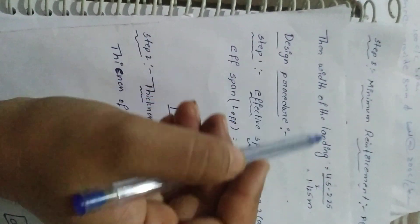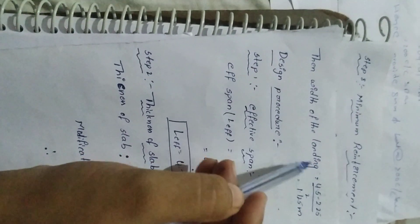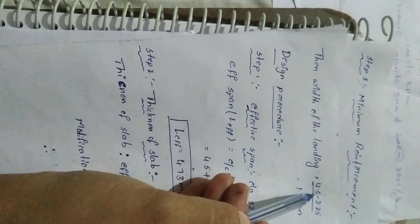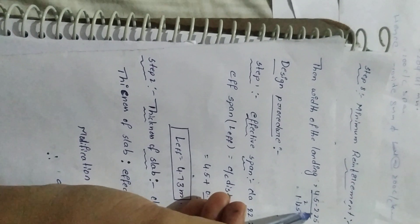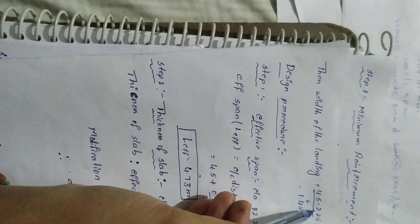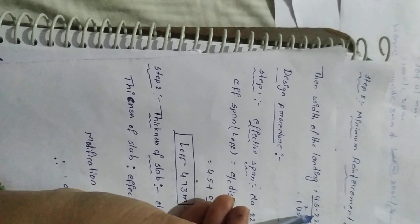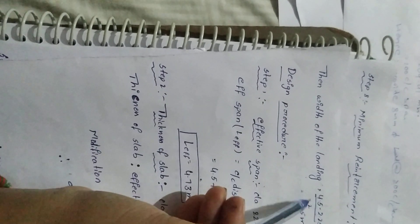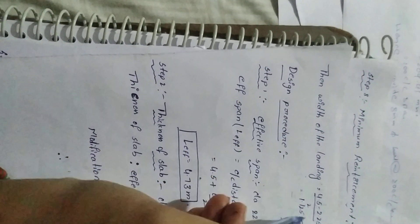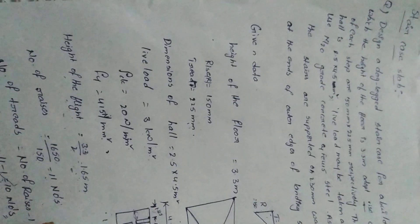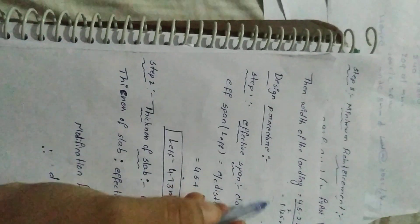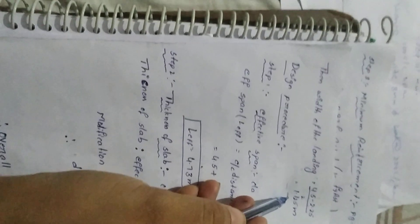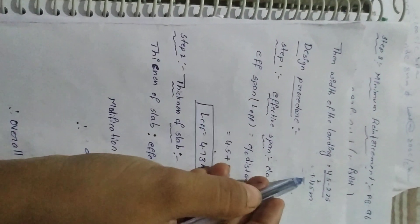Width of each landing: total hall length 4.5 minus step length 2.25 equals 2.25 meters remaining, giving two landings each of 1.25 meters. These are the basic dimensions before the main design procedure.